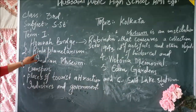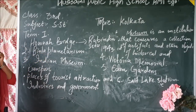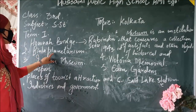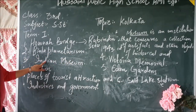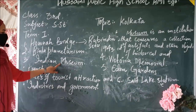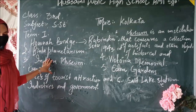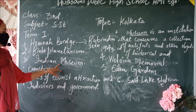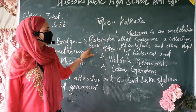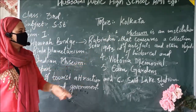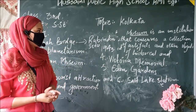Birla Planetarium is another tourist attraction in Kolkata, and it is the largest planetarium in Asia. The Indian Museum is the largest and the oldest museum in India. It has a rare collection of antiques. A museum is an institution that conserves a collection of artifacts and other objects of historical and cultural importance.